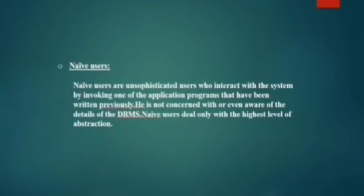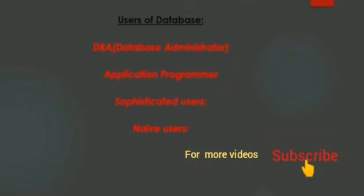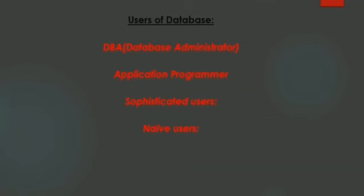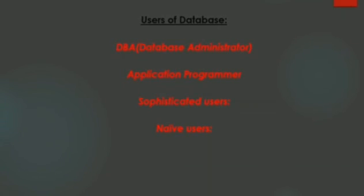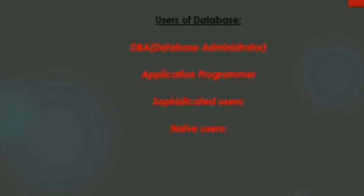The fourth type is the Naive User, also called the End User. To recap, the four types of database users are: first, the Database Administrator with overall control; second, the Application Programmer who uses application programs and high-level languages; third, the Sophisticated User who queries the database directly; and fourth, the Naive User or End User who uses the final product of application programs.